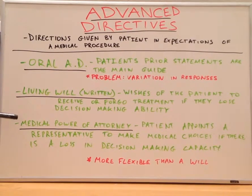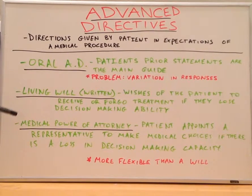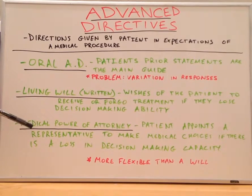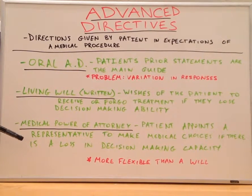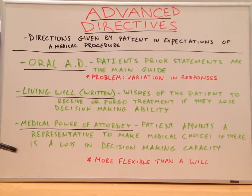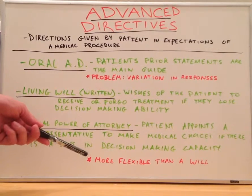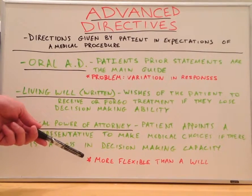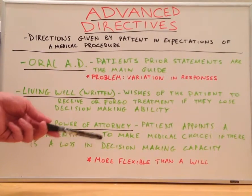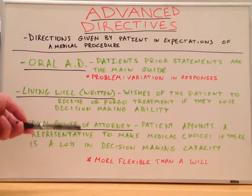Finally, we have the medical power of attorney. This is when a patient appoints a representative to make medical choices if there is a loss in decision-making capacity of the patient. The advantage here is that this is more flexible than a living will.